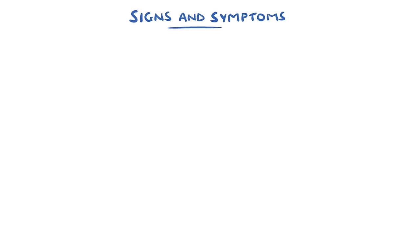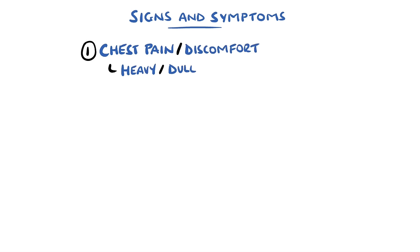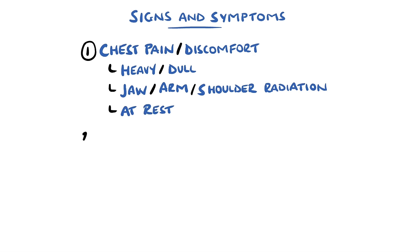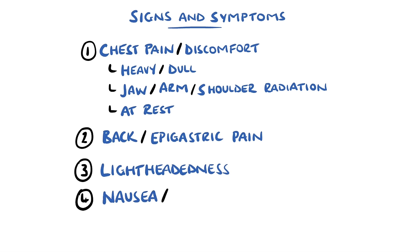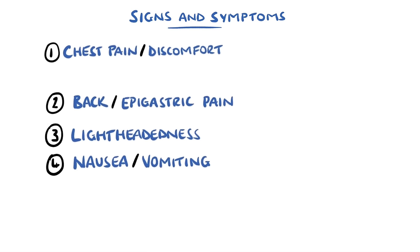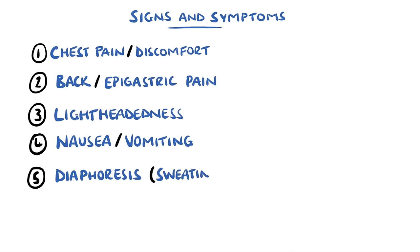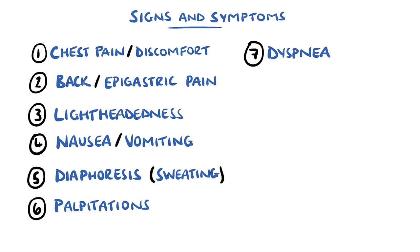Clinically, each one can present similarly. Symptoms include chest pain or discomfort, often described as heavy or dull, with radiation to the jaw, arm or shoulder that comes on at rest. Upper back pain and epigastric pain, or indigestion-like symptoms, are also possible symptoms of acute coronary syndrome. These were previously termed atypical symptoms. Patients can also complain of lightheadedness, nausea or vomiting, sudden heavy sweating known as diaphoresis, palpitations and dyspnea or shortness of breath.